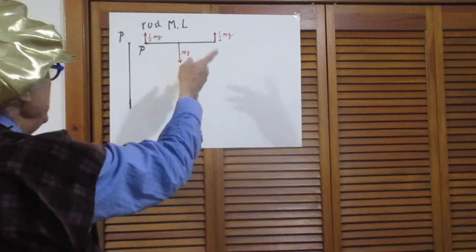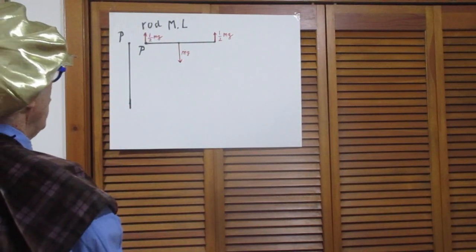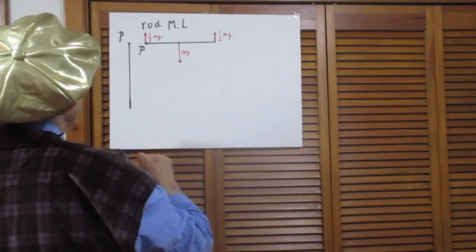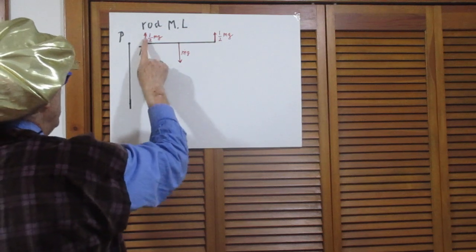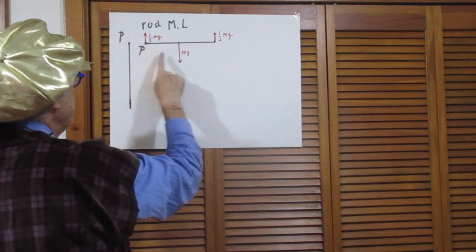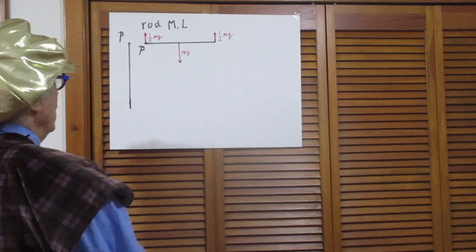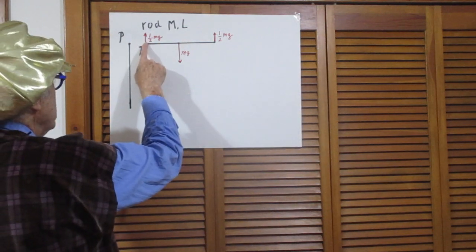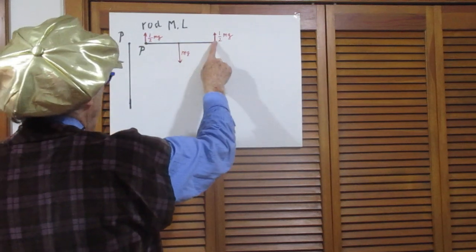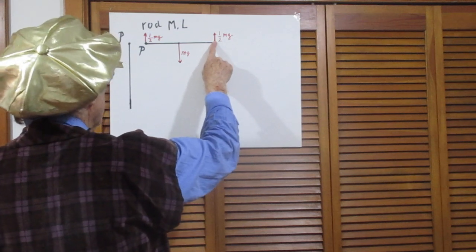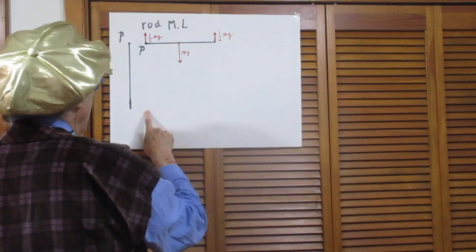In addition, the sum of all torques relative to any point you choose must also be zero — if not, the rod would start to rotate, and it can't. The only solution for these three forces is: at point P there must be an upward force of one-half mg, my hand exerts one-half mg, and gravity is mg. The torque is zero relative to any point — the only way to meet both conditions.